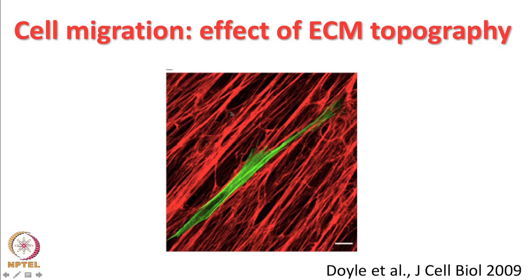When cells are plated on aligned matrices there is a greater chance they will migrate along the alignment direction. The red depicts the matrix broadly aligned in one direction, and green shows the cell. The cell elongates along the long axis of the fiber, senses the underlying topography, and walks along the fiber — similar to how it is easier to cut wood along the grain.